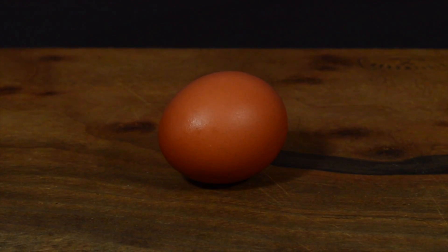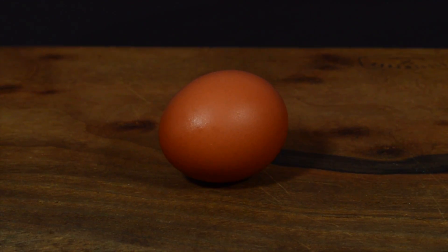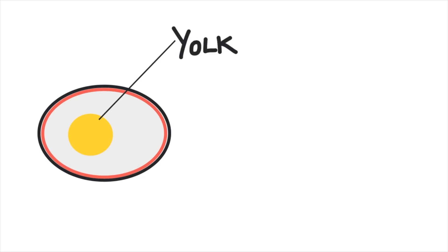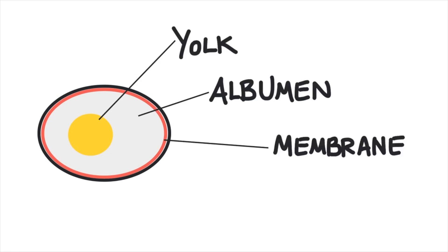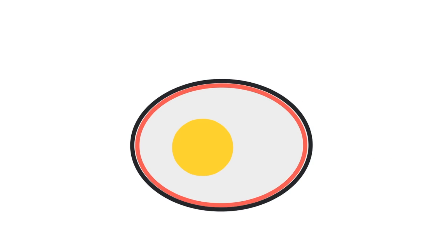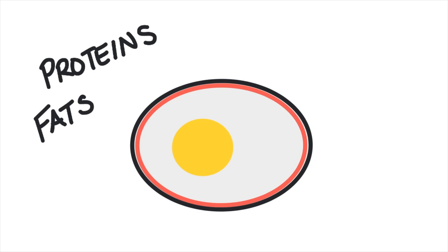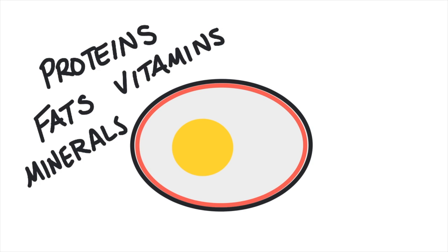A chicken egg has about four different layers. The yolk is in the center, the albumin surrounds the yolk, a flexible membrane surrounds the albumin, and then finally the hard shell is on the outside. Overall the egg contains all kinds of proteins, fats, vitamins and minerals.